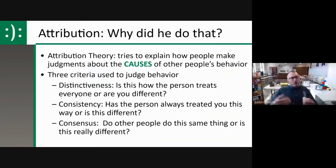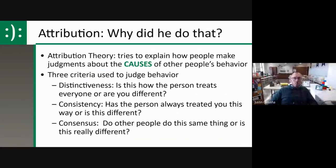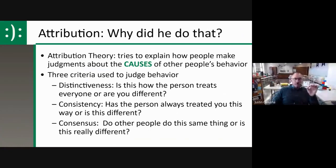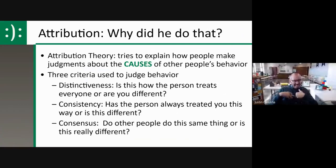So what is attribution? Attribution theory tries to explain why someone else did something - what caused them to do that. Usually there are three criteria we use to judge someone else's behavior. First, we look at how distinctive it is - is this how the person always treats me? Have they always said hi to me and now all of a sudden they're not? Distinctiveness is about whether this person treats everyone this way, or am I being treated differently.